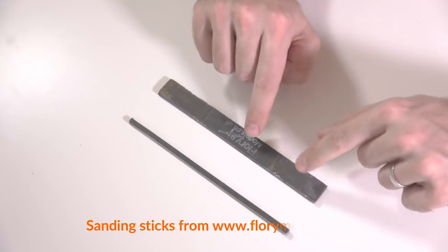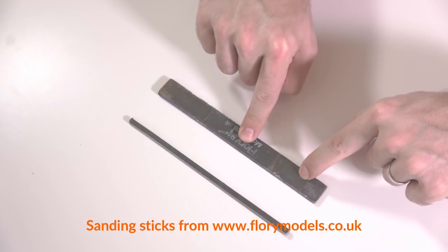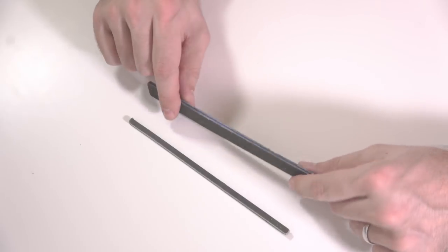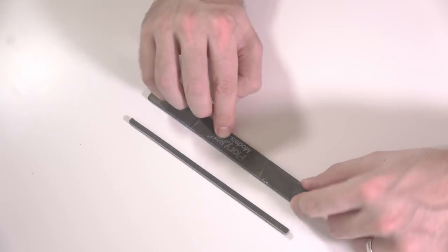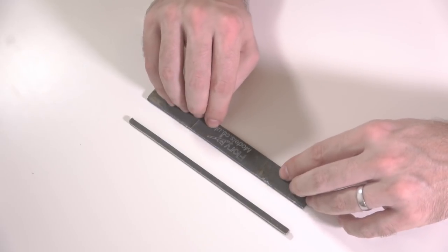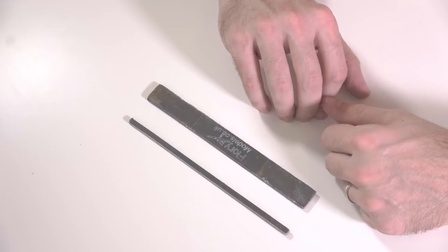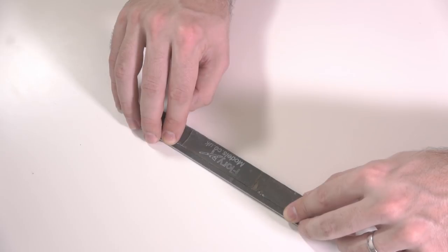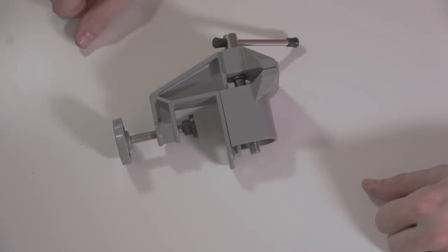And the final bit of essential kit that you need, well in my opinion anyway, is some sanding sticks. Sanding sticks are a bit more forgiving than traditional files. I get mine from Flory Models, they come in various grades, the fine ones are best, and you can clean up brass very quickly, very easily with these. They're excellent for removing any scratches you have on the surface. So that rounds out the equipment I think is essential when building a model locomotive kit.